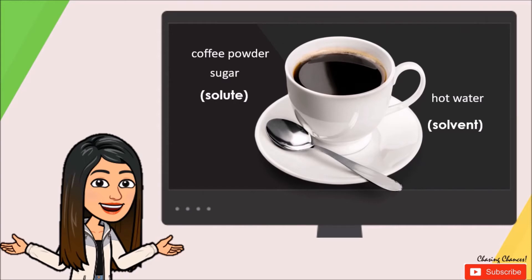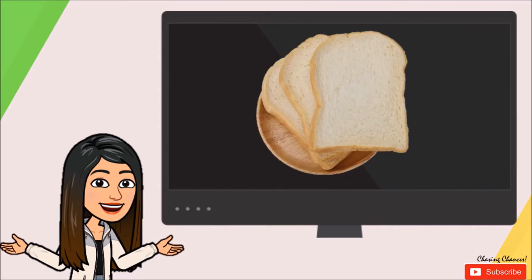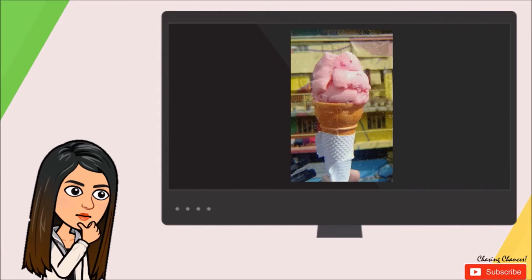This bread is also an example of a homogeneous mixture. Do you know that there is flour, yeast, salt, butter, milk, sugar and warm water in this one? Ice cream. Do you know that this ice cream is made of condensed milk, cream, vanilla extract and strawberry? This is an example of a homogeneous mixture as well.